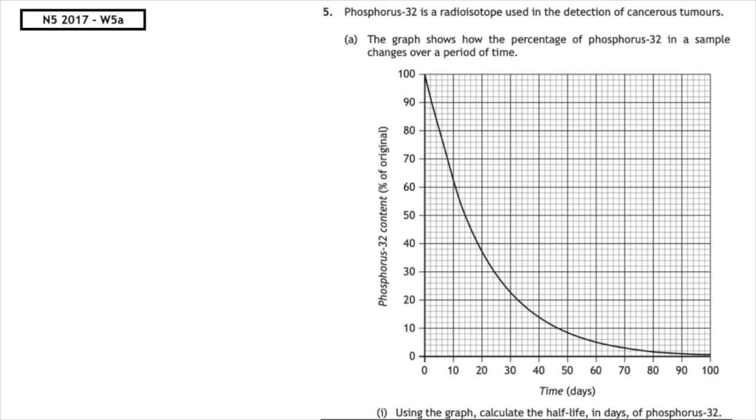So at time zero, we have an original percentage of 100. If 100% undergoes one half-life, that will give us a total of 50%. We then draw a line from 50 on our y-axis until we meet the curve, which is plotted on the graph. And then we extrapolate that down to the x-axis.